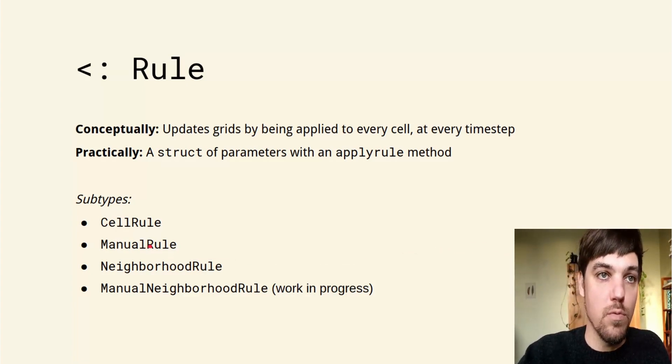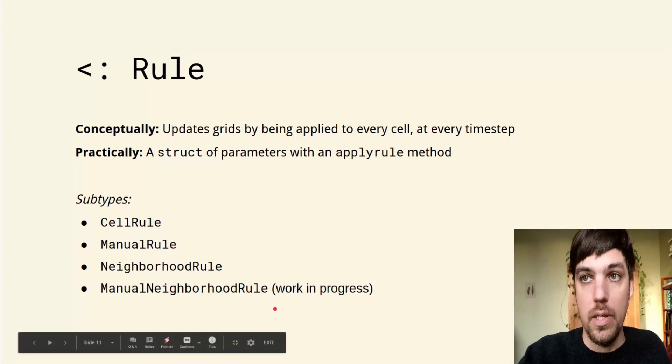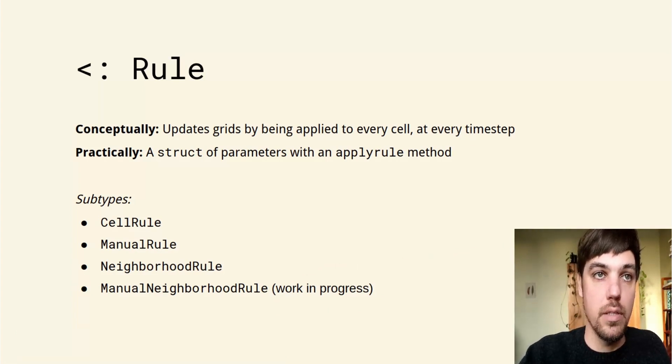We have cell rule, manual rules, neighborhood rules, and manual neighborhood rules, which we won't talk about today. Basically, they determine the kinds of optimizations and behaviors we can use for each rule.